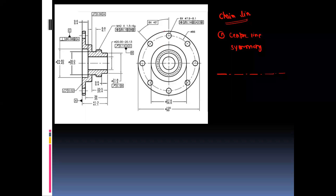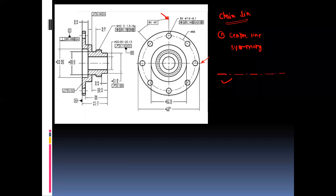Observe here — this is a circle and it has some features. It is symmetrical about this axis and at the same time symmetrical about this other axis. To represent this symmetric axis we will use this line. The complete line drawn here is nothing but the chain line.